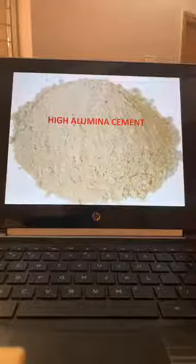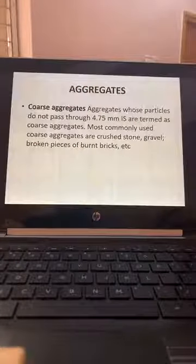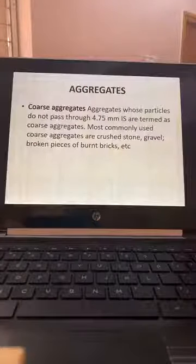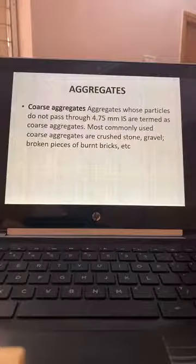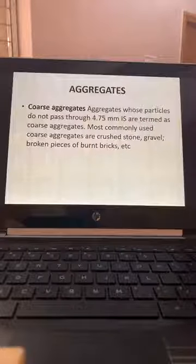High-Aluminous Cement is used in most applications. For aggregates — the smallest coarse aggregate size is 4.75 mm, which is termed as coarse aggregate. Most commonly used coarse aggregates are crushed stone.